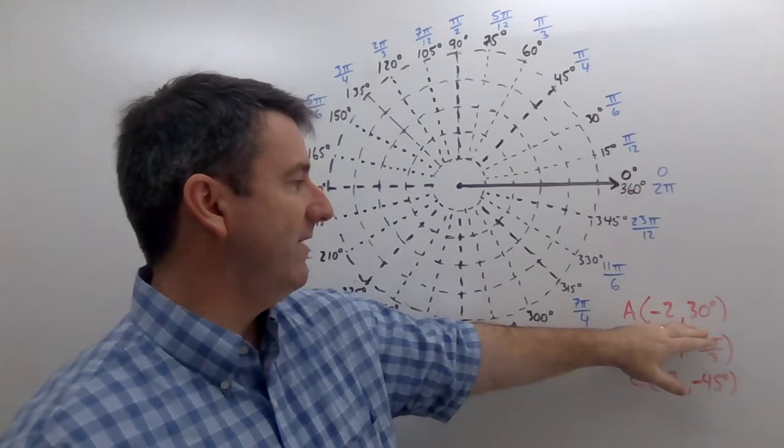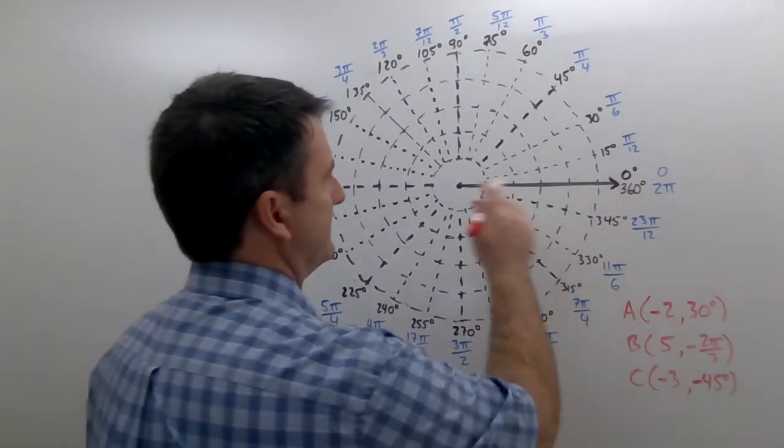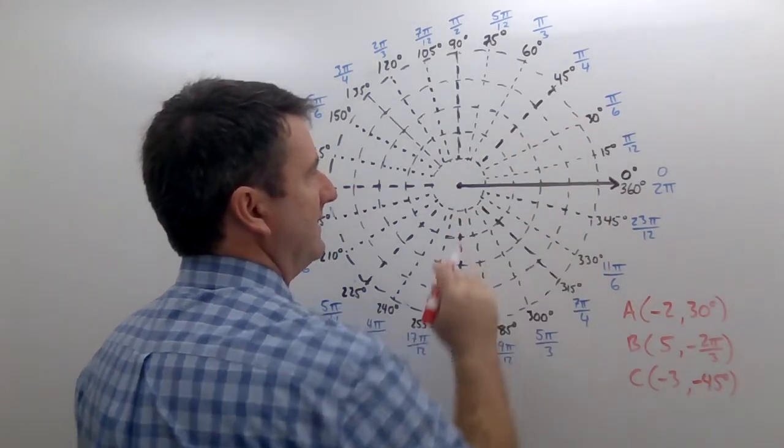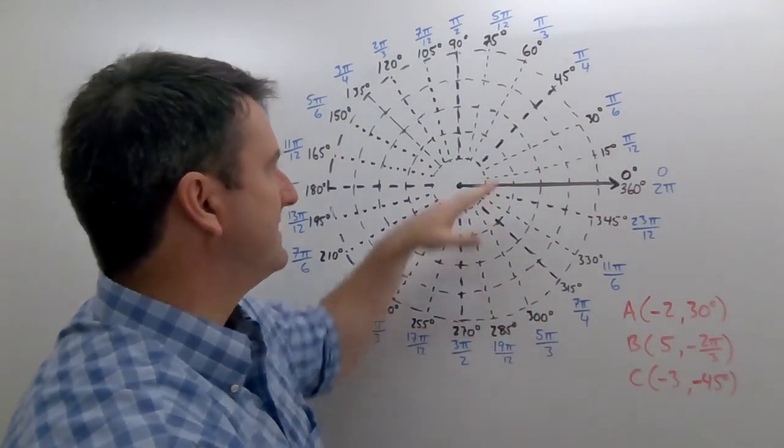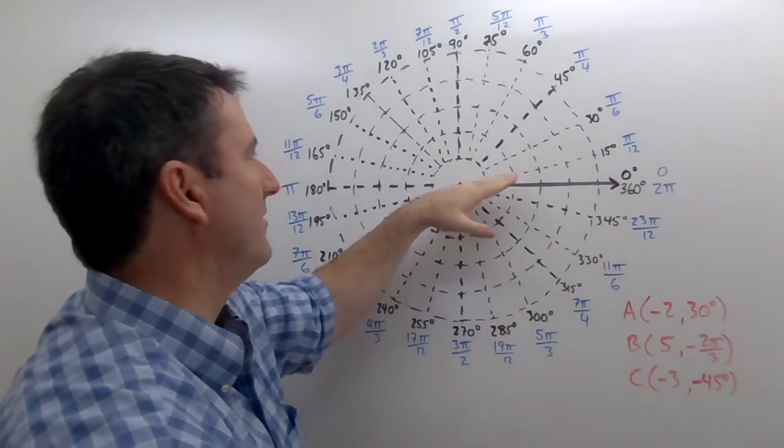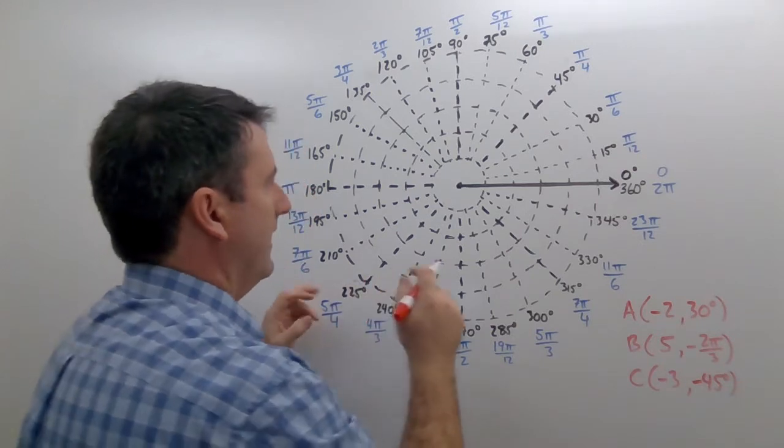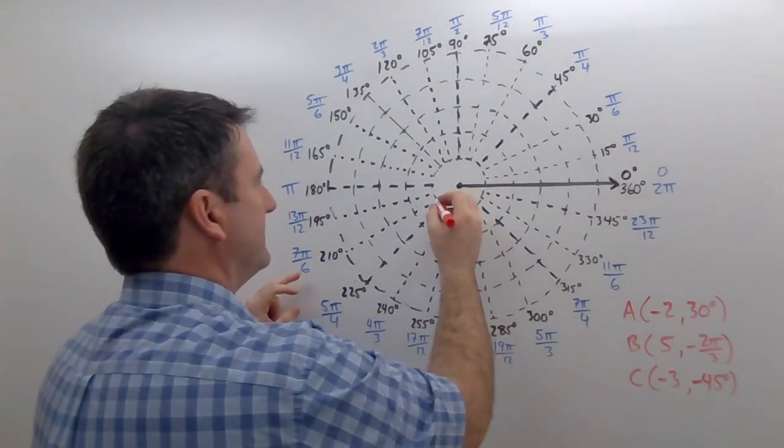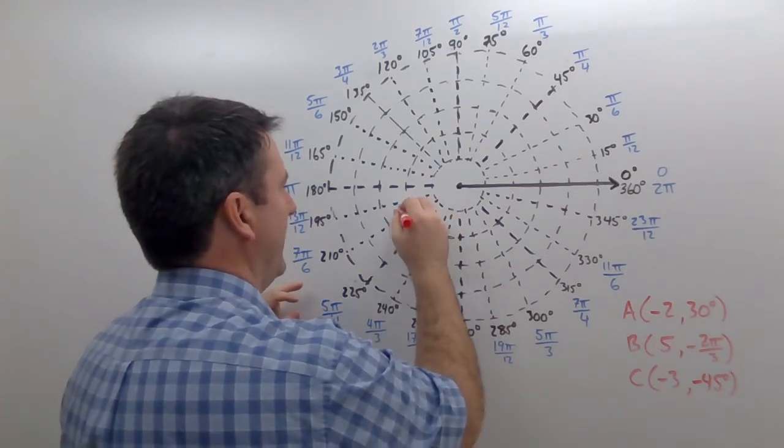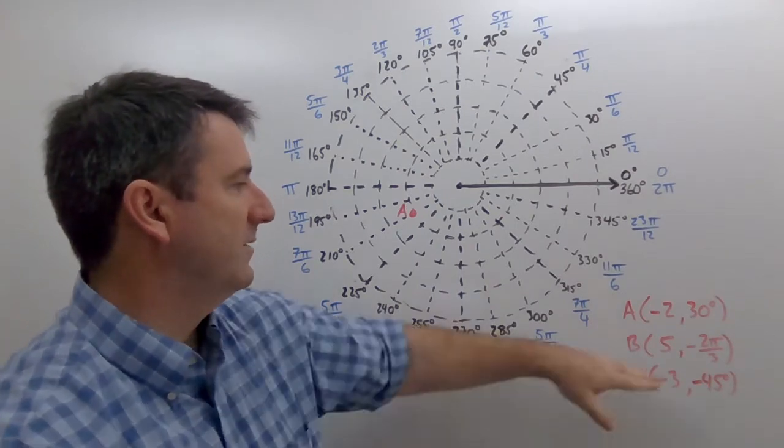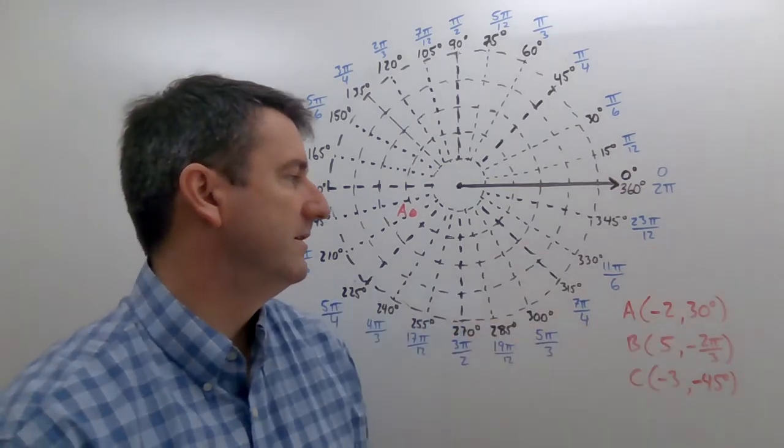So this first point has a negative r and a positive theta. So we're going to go first to 30 degrees. So it's going to be somewhere out on this line here, out toward 30 degrees. But instead of going out that direction, we're going to go the opposite direction, which is going to be out here toward 210 degrees. And we're going to go out two units. So one, two, right there is going to be the point A. We went to 30 degrees, and then went in the opposite direction, two, to give our negative two.